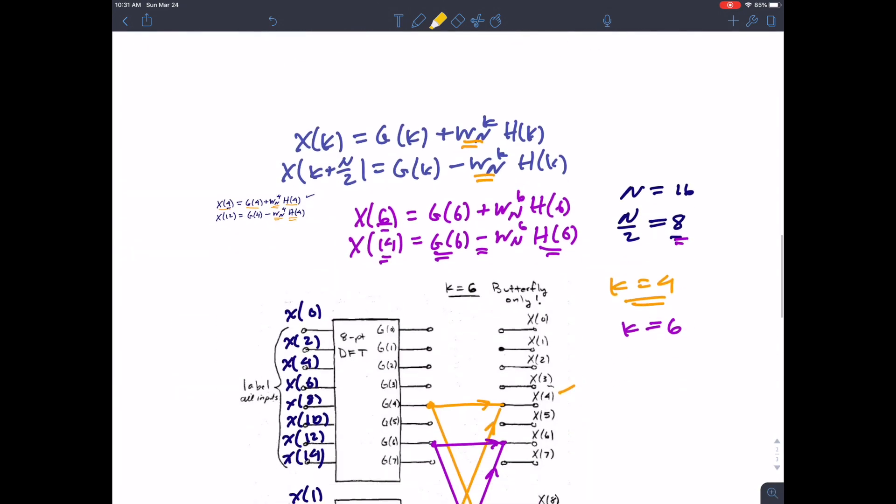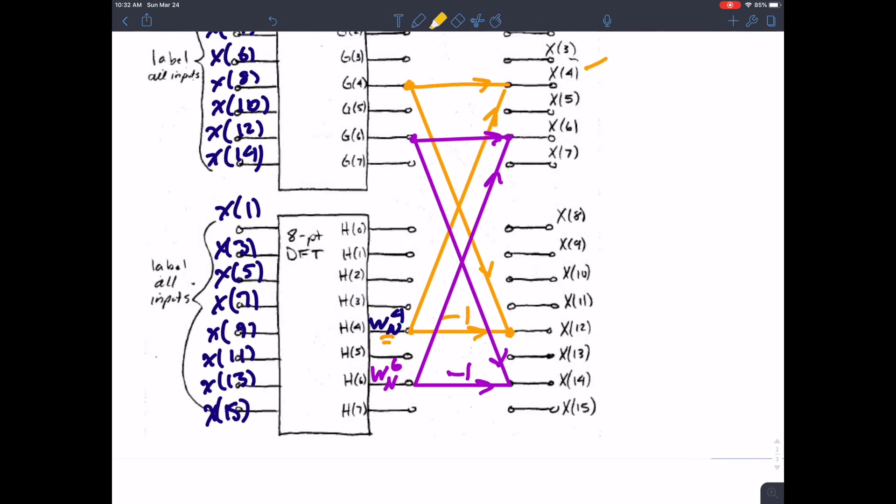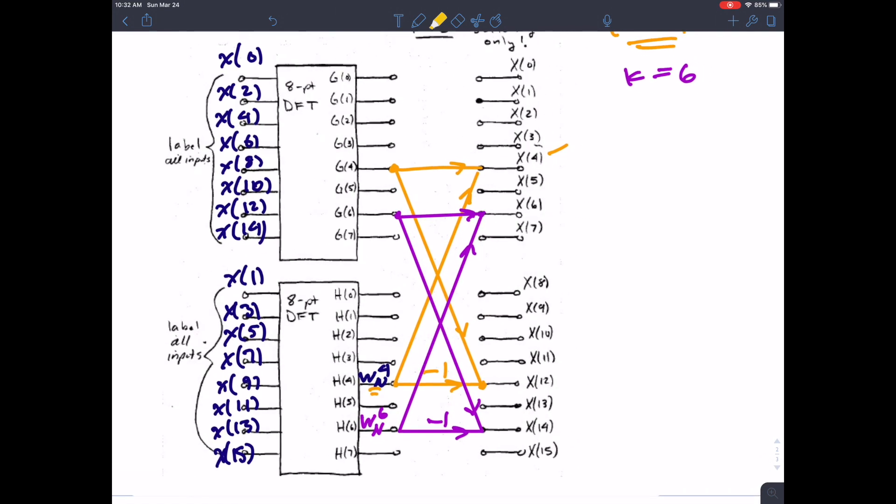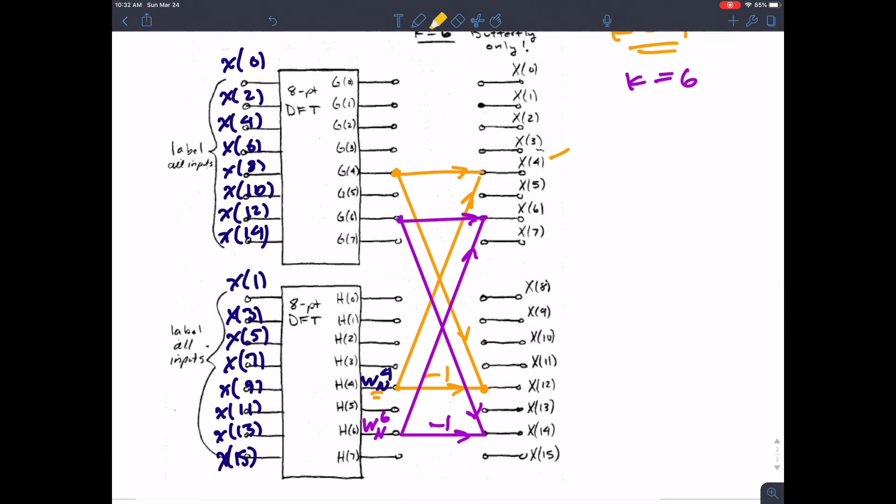we've only done two butterflies but we can look at our work and generalize that on how many complex multiplications and how many complex adds are needed to merge this 8-point FFT with the 16-point FFT. So going to our work we see here this is what we came up with. This is two butterflies out of how many would we have? We would have eight butterflies.